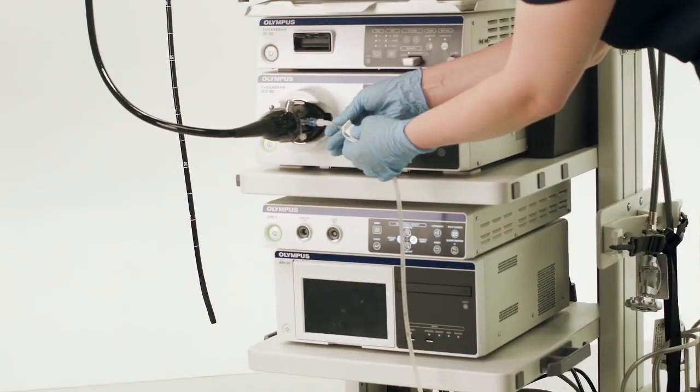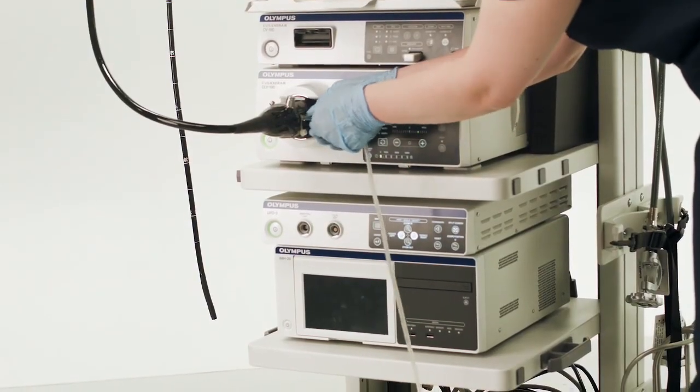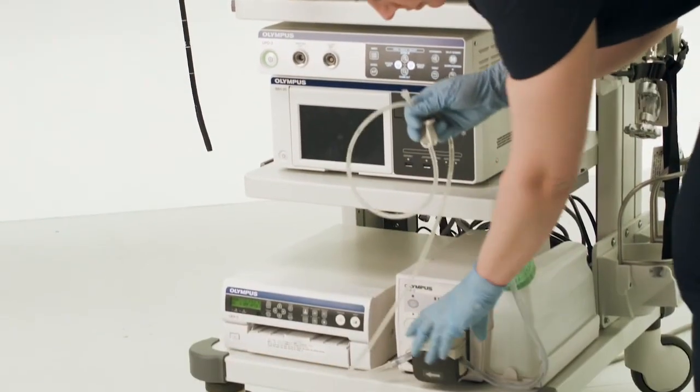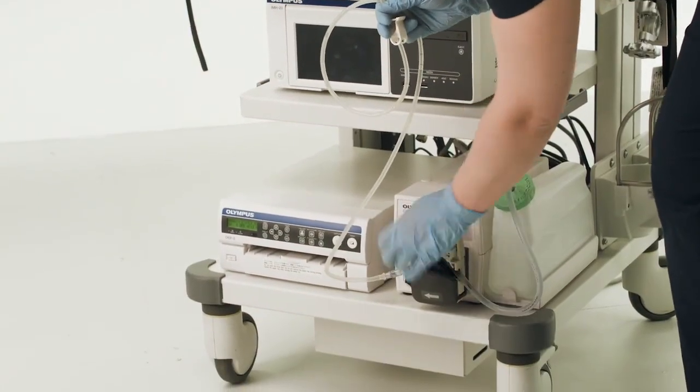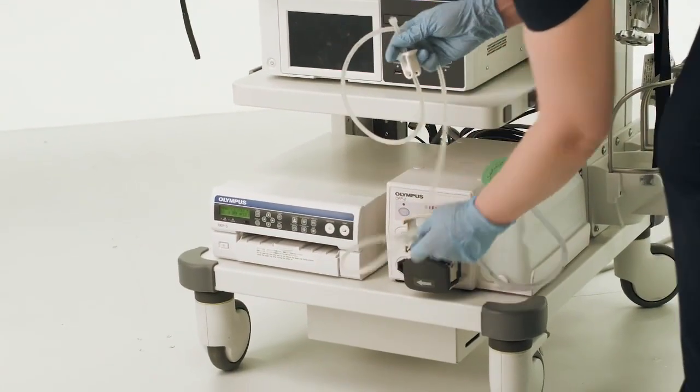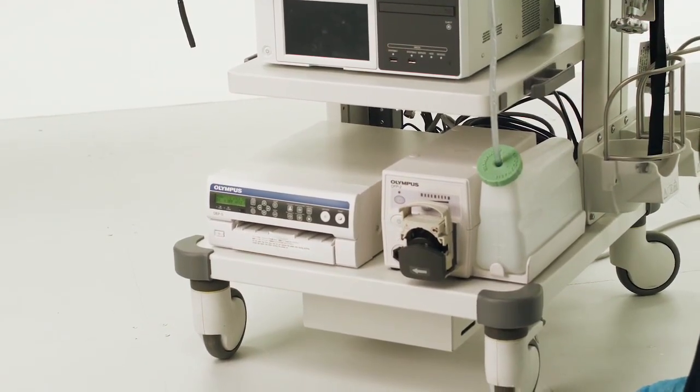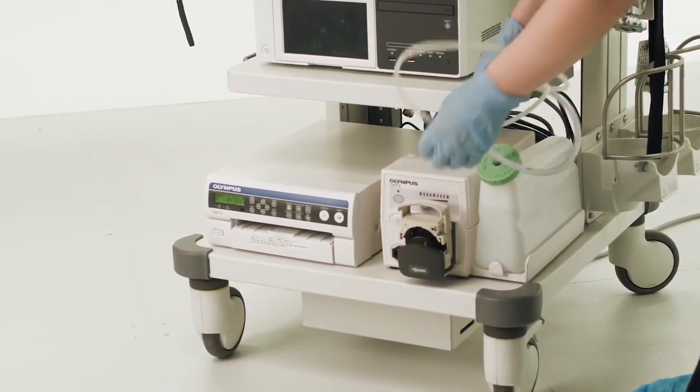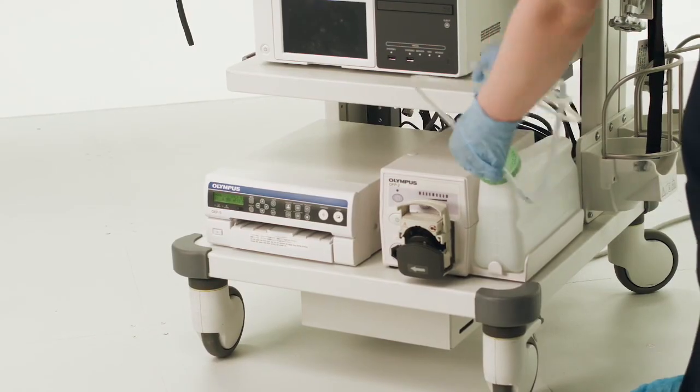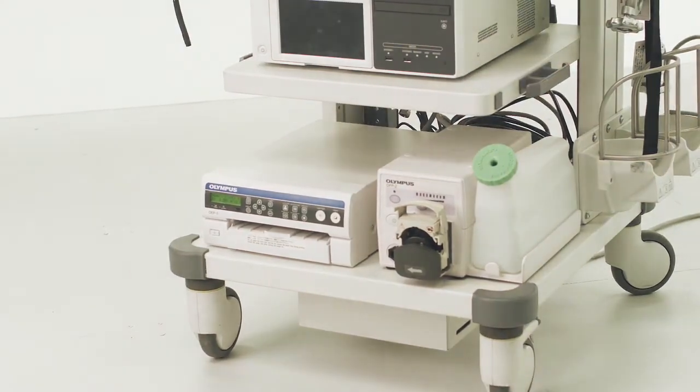After final use, engage the pinch clamp. Holding the water tube higher than the water container, lift the pump head and then release the pinch clamp to allow the water in the tube to return to the water container. Dispose of the MAJ 1651 and MAJ 1652 in accordance with hospital guidelines.